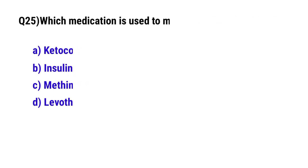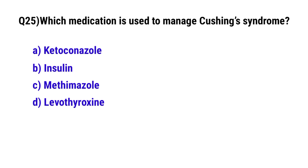Question number 25: Which medication is used to manage Cushing's syndrome? The correct option is A: ketoconazole.